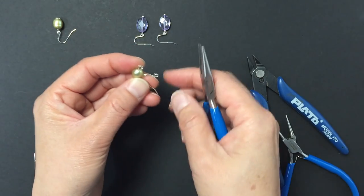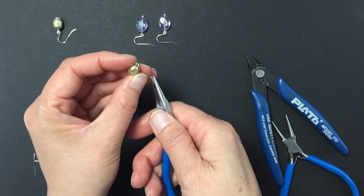Hold the ear hook firmly in one hand, and using a pair of flat nose pliers, bend open the loop.